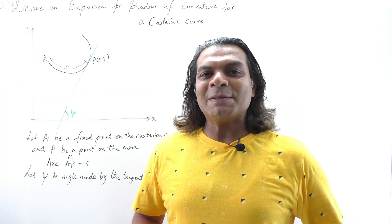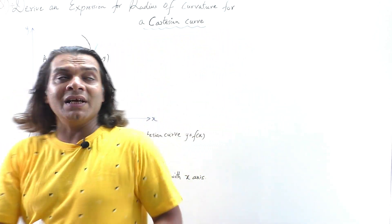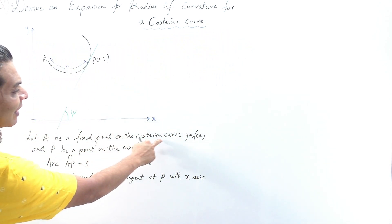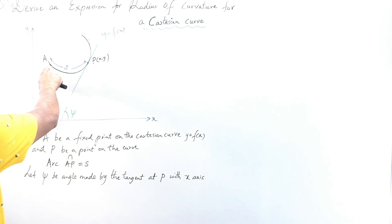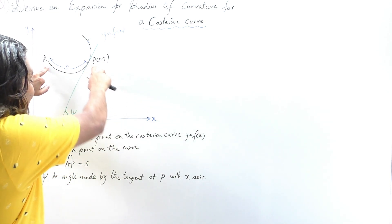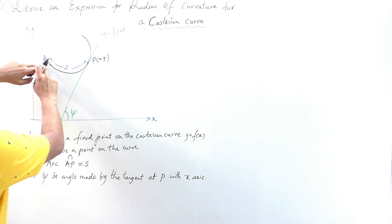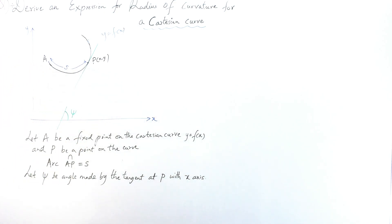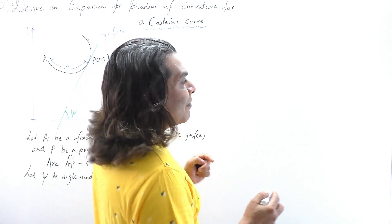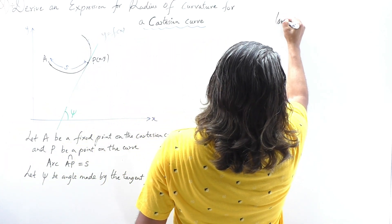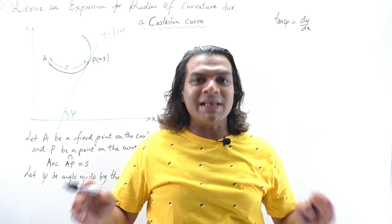Now let us derive an expression for the radius of curvature for a Cartesian curve. Let A be a fixed point on y = f(x), and P a point on the curve. We already know that tan ψ = dy/dx. We will differentiate this with respect to the arc length s, because by definition ρ = ds/dψ. Differentiating with respect to s: d/ds(tan ψ) = d/ds(dy/dx).